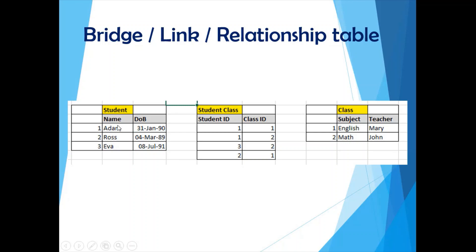We have the student entity with name, date of birth, and many more fields, and the class entity. You need to create another table to link these two original tables — that is the bridge table, also known as a link table or relationship table. In this bridge table, you create an ID column for students as the primary key in the student table, and similarly a primary ID column for the class entity. The bridge table stores the student ID and the class ID.